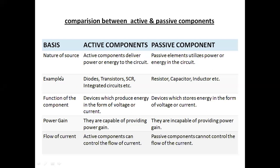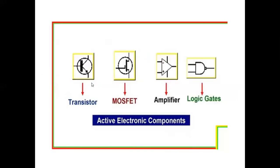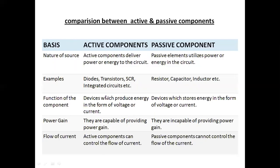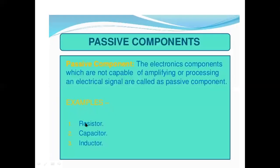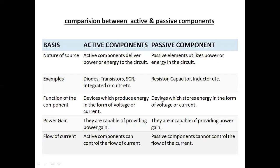The second comparison point is examples. Active components are transistor, MOSFET, amplifier, and logic gates. These are examples of active components. The passive components — as mentioned in the previous slide — are resistor, capacitor, and inductor. These three are the examples of passive components.